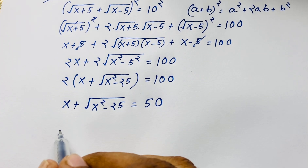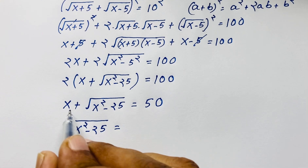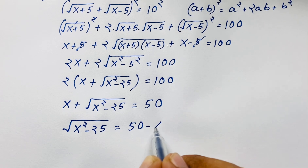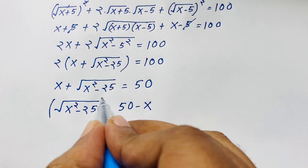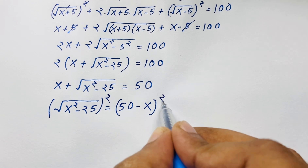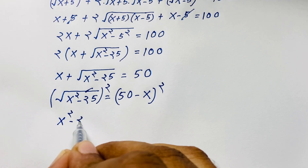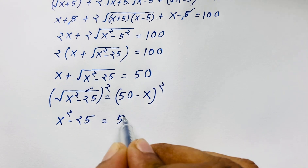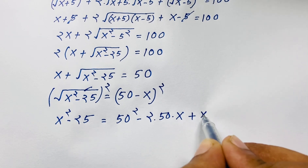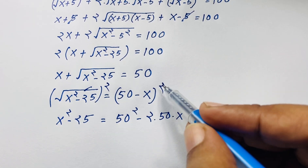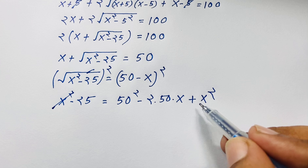Now we find square root of (x squared minus 25). If I move x to the other side, it becomes negative x. Now I use both sides whole square. So square root of (x squared minus 25) squared gives x squared minus 25, and on the right side (50 minus x) squared, applying the formula (a minus b) squared equals a squared minus 2ab plus b squared, gives 2500 minus 100x plus x squared.